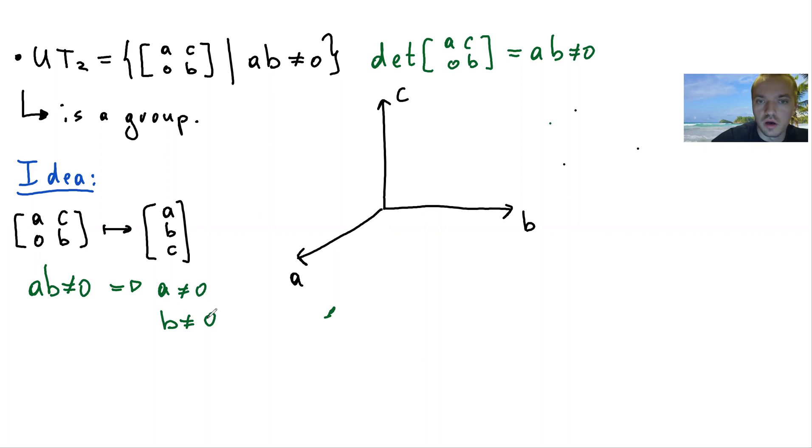So from here it follows that in our three-dimensional space we require that the a component cannot be equal to zero and the b component cannot be equal to zero. Why is this true? Because if either of these components is going to be equal to zero, then their product is zero, so that matrix is not going to belong to our space.